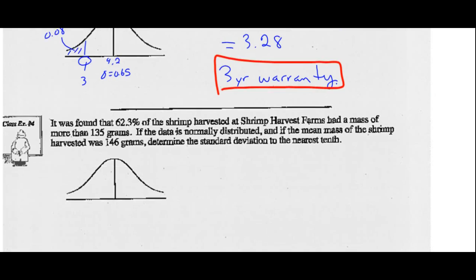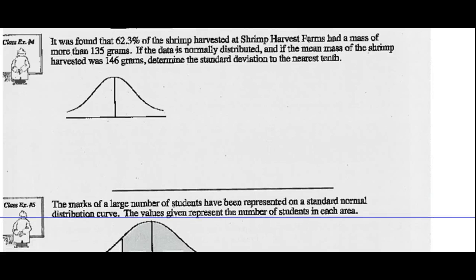Example 4. It was found that 62.3% of the shrimp harvested at Shrimp Harvest Farms had a mass of more than 135 grams. The data is normally distributed. It has a mean mass. The shrimps, and if the mean mass of the shrimp harvested was 146, find the standard deviation. So we don't know the standard deviation, but we do know that 135 gram shrimp or more, 62.3% of the data is in there. So 0.623 is in that shaded section.